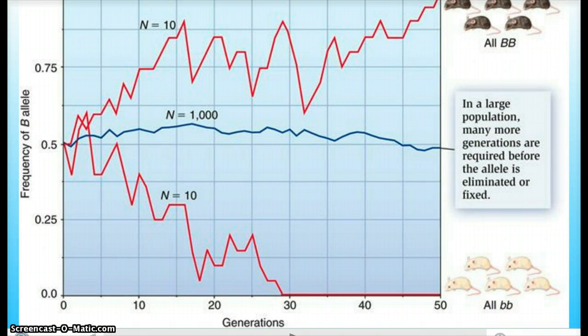As you can see in this graph, we have three populations and we're dealing with mice here. The first two populations have ten mice.